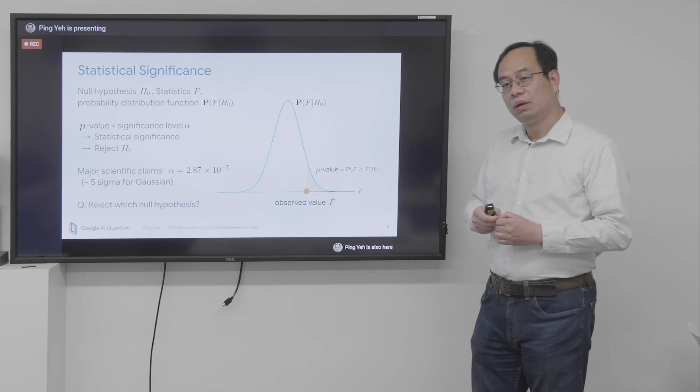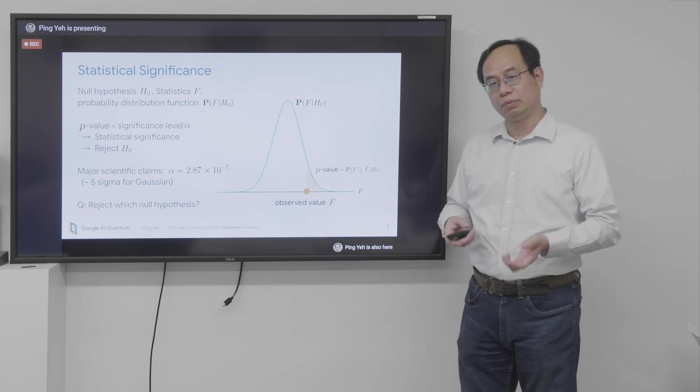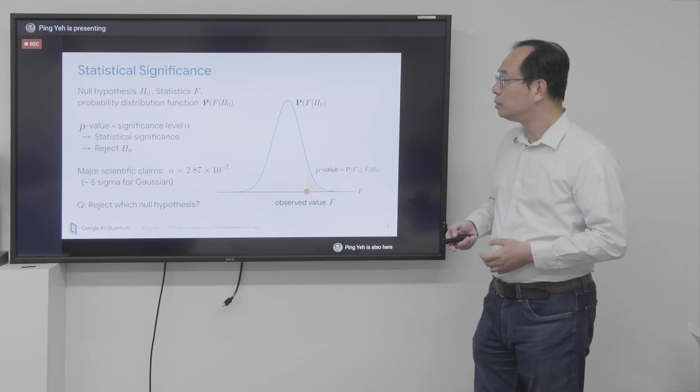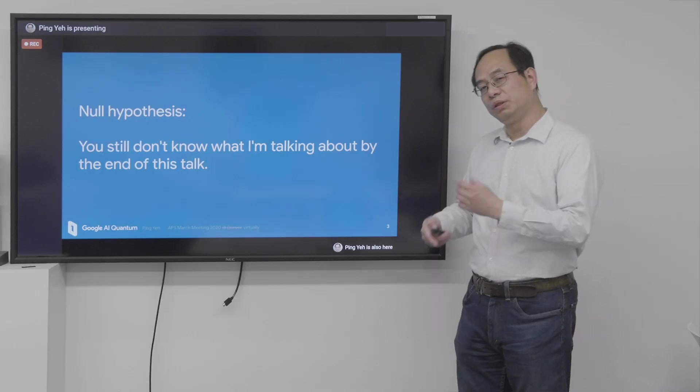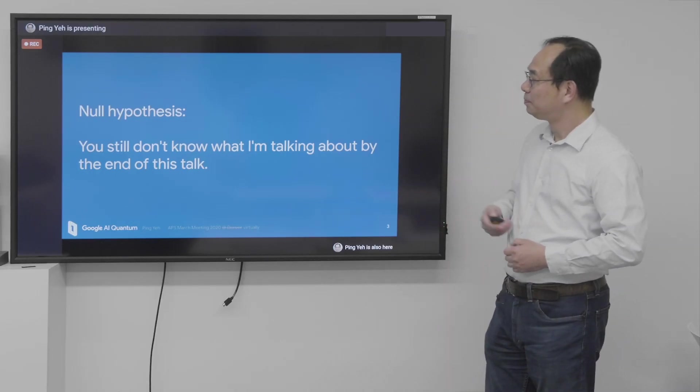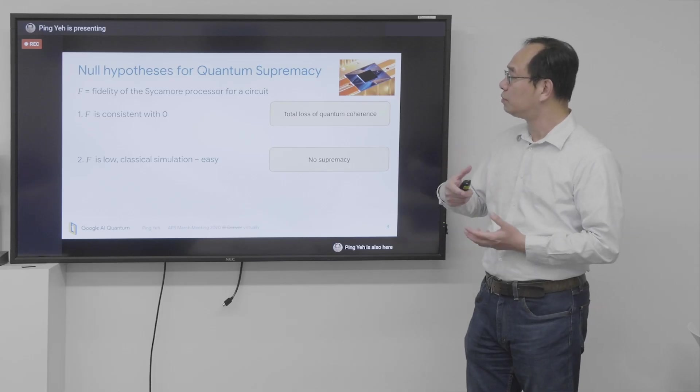So the question is, which null hypothesis are we talking about rejecting for quantum supremacy? So before going to that, I have a null hypothesis for my talk. So hopefully, you can help me reject it at the end. So the null hypothesis for quantum supremacy, the value F here is the fidelity of the Sycamore processor for a circuit.